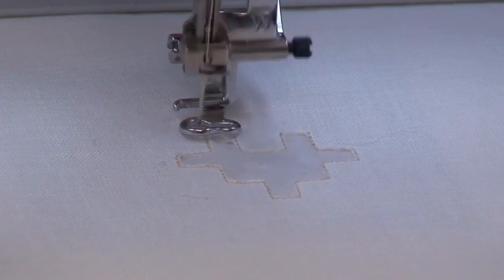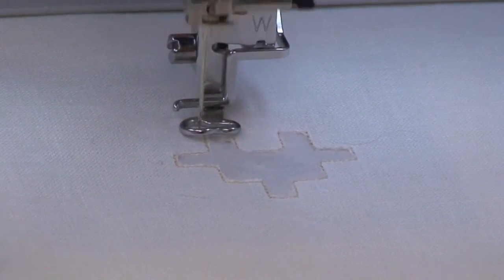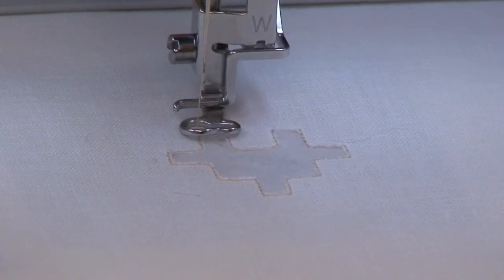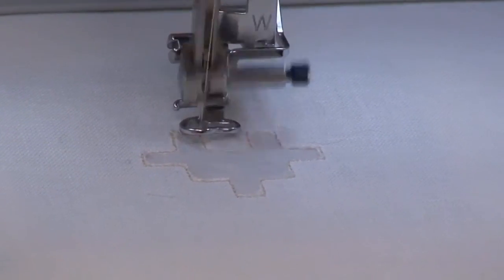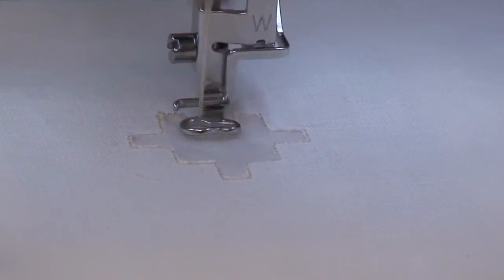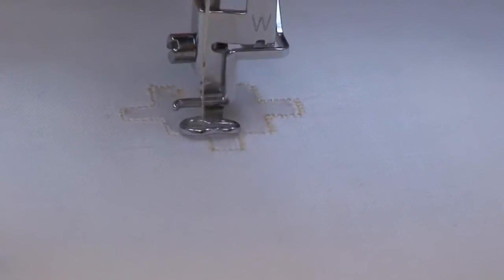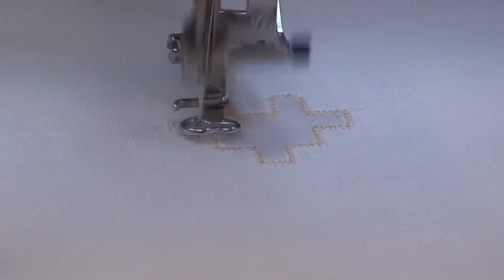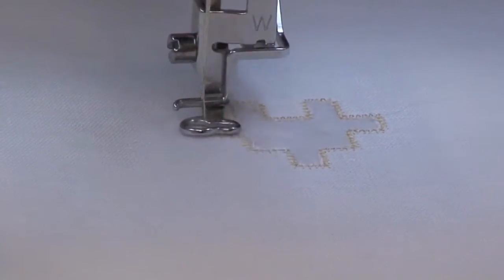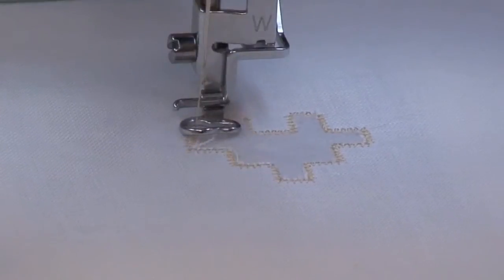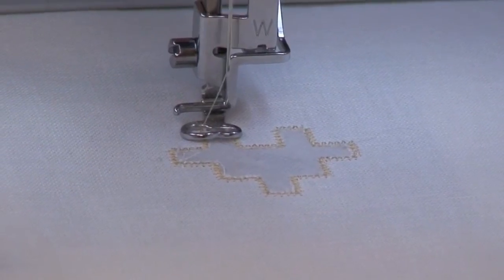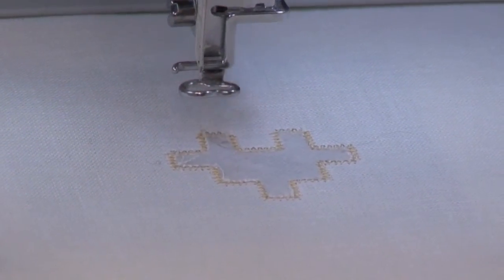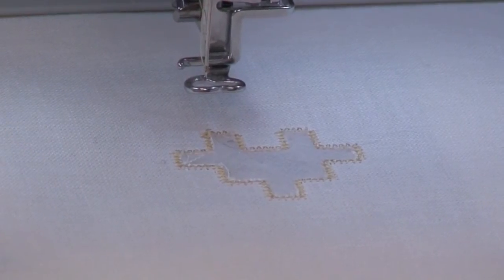So I'm going to press start. And the next thing will be the zig zag tack down. I have a stop programmed after that. So that we can check and make sure that there are no fibers that we need to trim off. Obviously when you put your hoop back in the machine, you want to make sure that all of the fabric is out of the way. So you don't accidentally sew your hoop into the fabric. So I'm going to take my hoop out so you can get a close up view. And we can look and see if there's anything we need to trim.